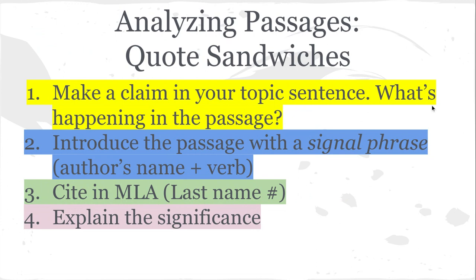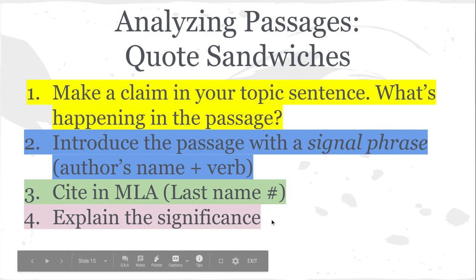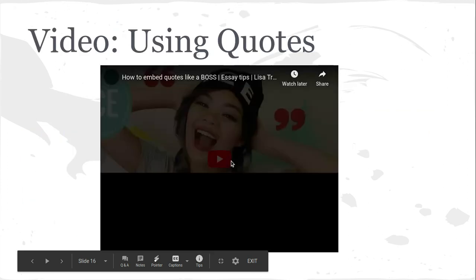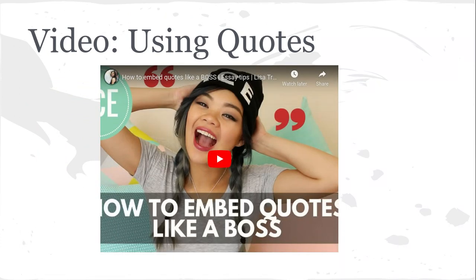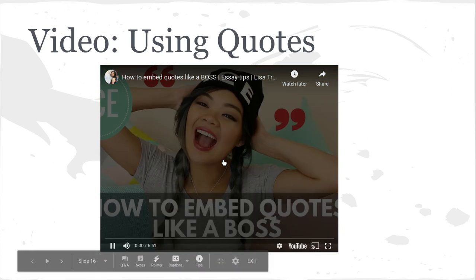One way we can analyze passages is using a method called the quote sandwich. First, make a claim in your topic sentence — tell us what's happening in the passage. Then introduce the passage you're using with a signal phrase, which is simply the author's name plus a verb. Then cite in MLA — after the quote itself, include a citation with the author's last name and the page number where you found that information. Finally, explain the significance — this is that analysis piece that's really important. There's also a short video on how to embed quotes using the quote sandwich method, which will be posted to this week's module.